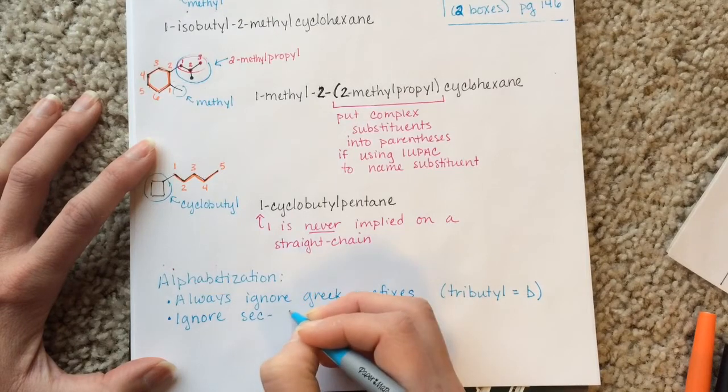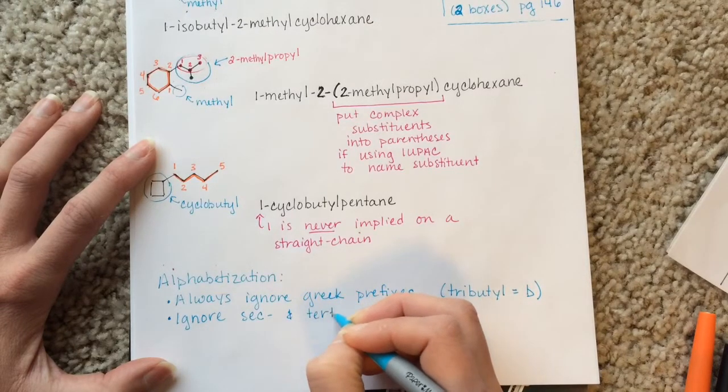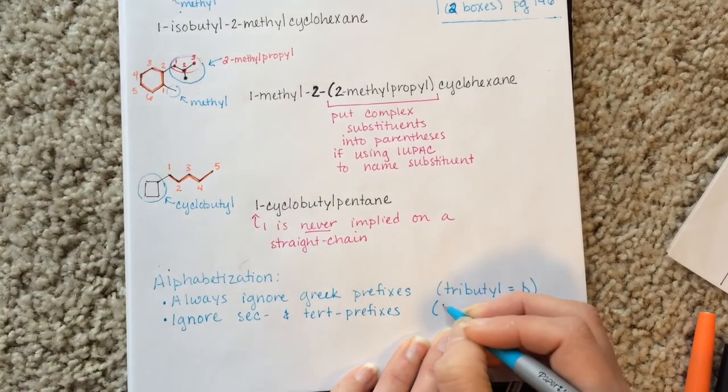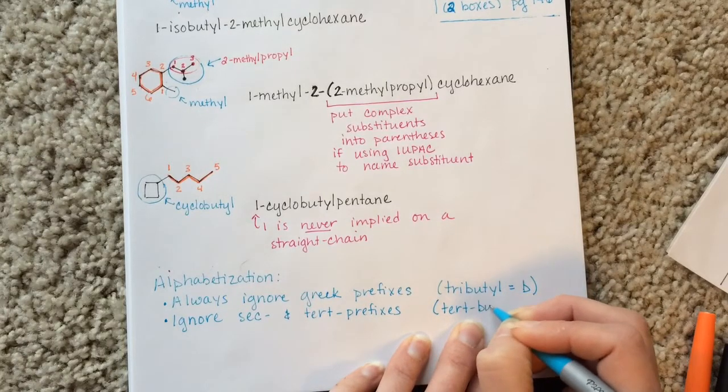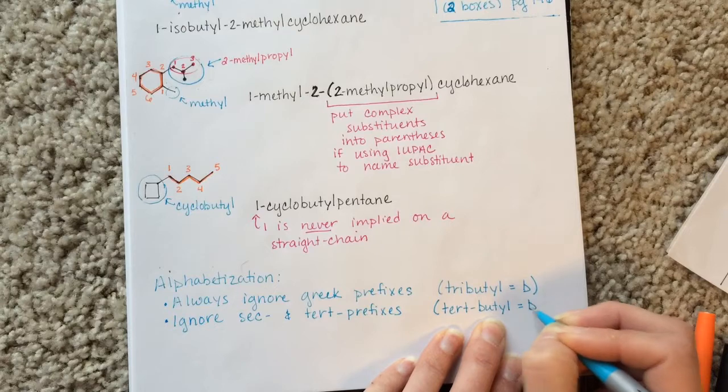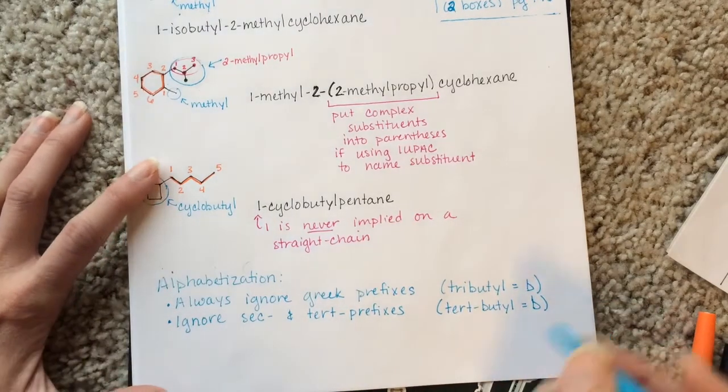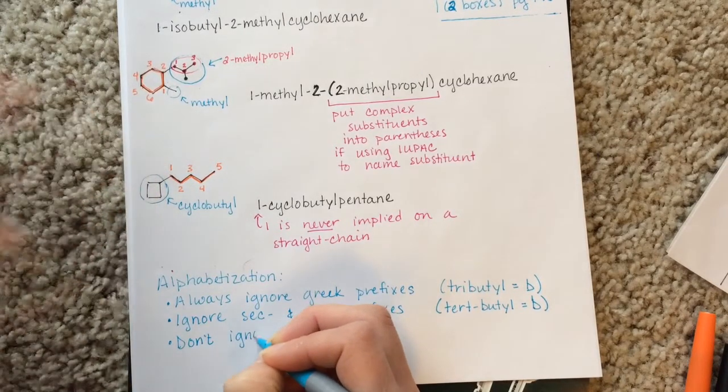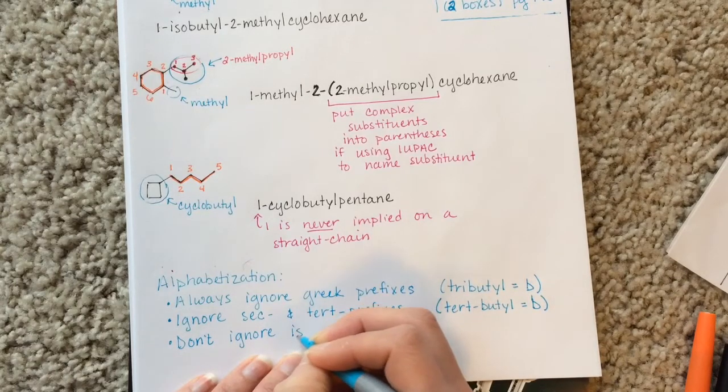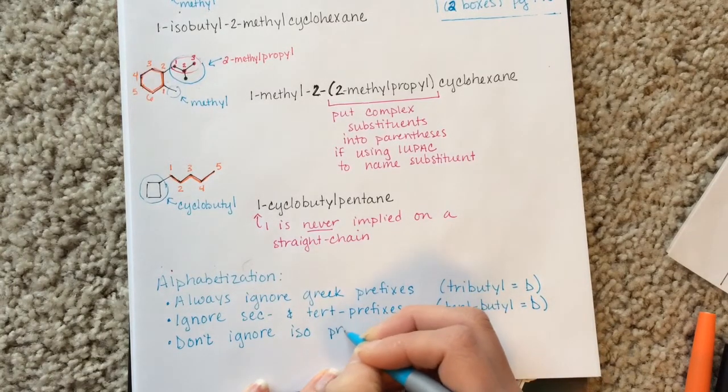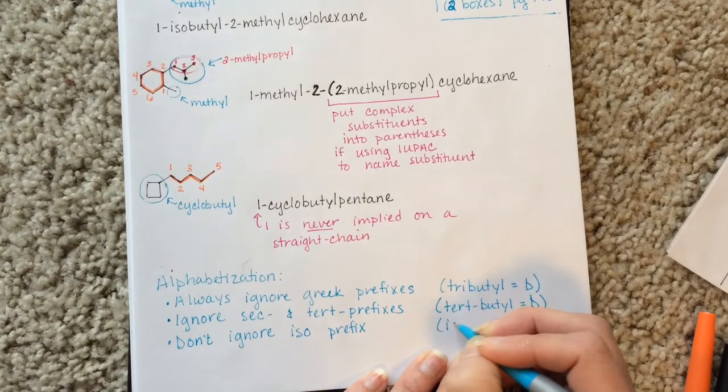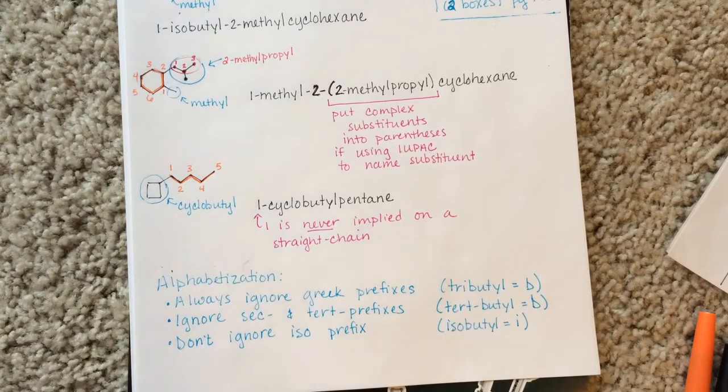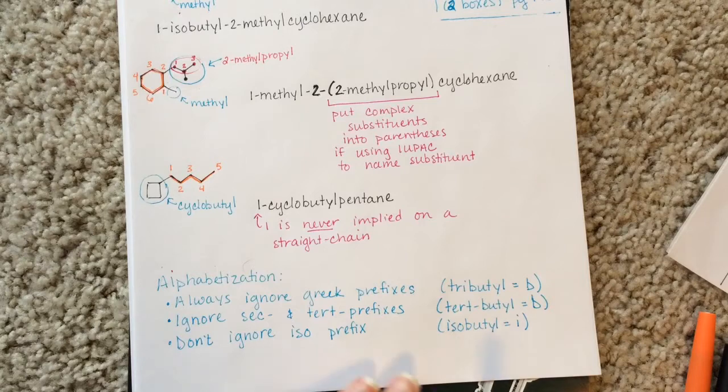For complex substituents, you are always going to ignore the sec and tert prefixes. So that means that tert-butyl is a B or sec-butyl would be a B. You don't ignore the iso prefix. So that means that isobutyl is an I or isopropyl is an I. That's tricky.